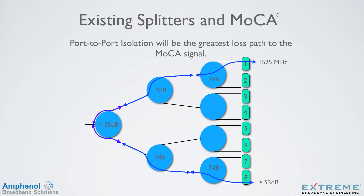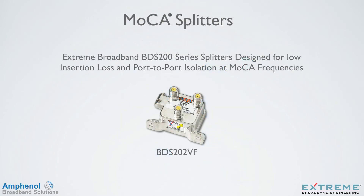Port-to-port isolation will be the greatest loss path to the MoCA signal. To overcome these issues, the Xtreme Broadband BDS 200 series splitters have been designed for low insertion loss and port-to-port isolation at MoCA frequencies, enabling good MoCA communication between the splitter ports.